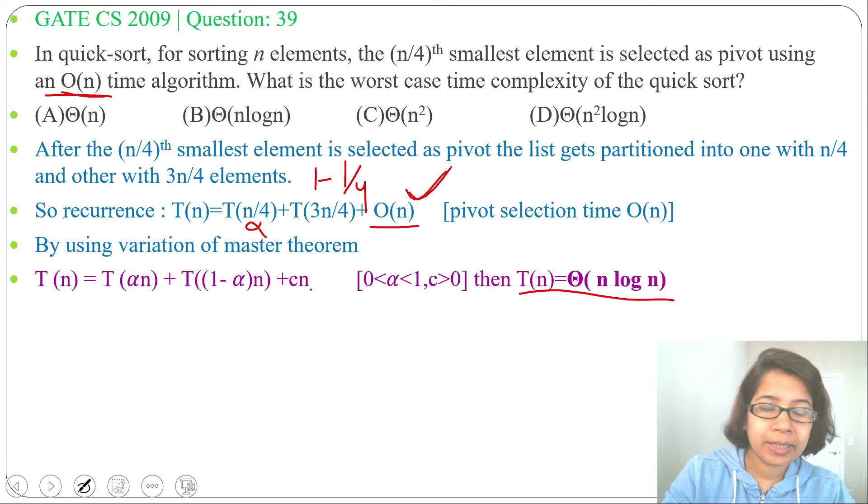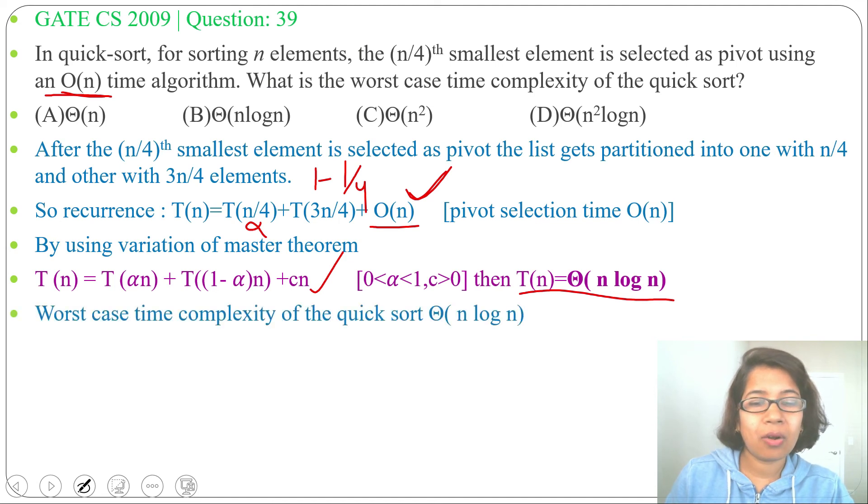So the worst case time complexity of QuickSort will be Θ(n log n) if you choose the (n/4)th smallest element as pivot. This is present in option B, so the answer will be option B: Θ(n log n).